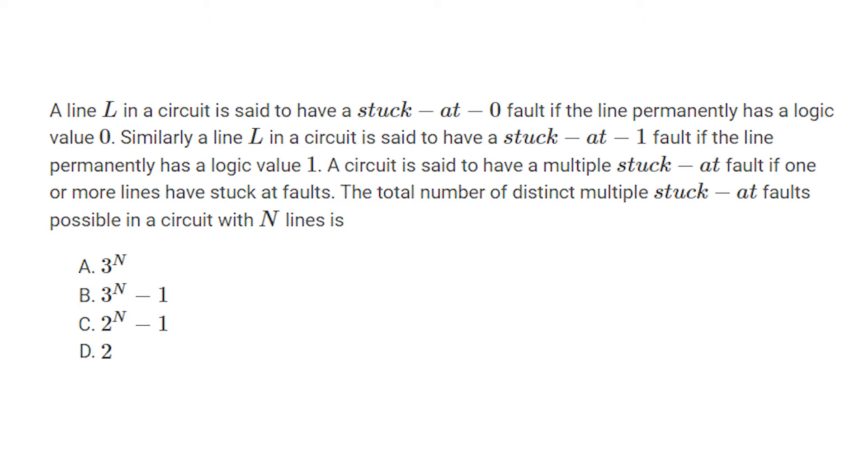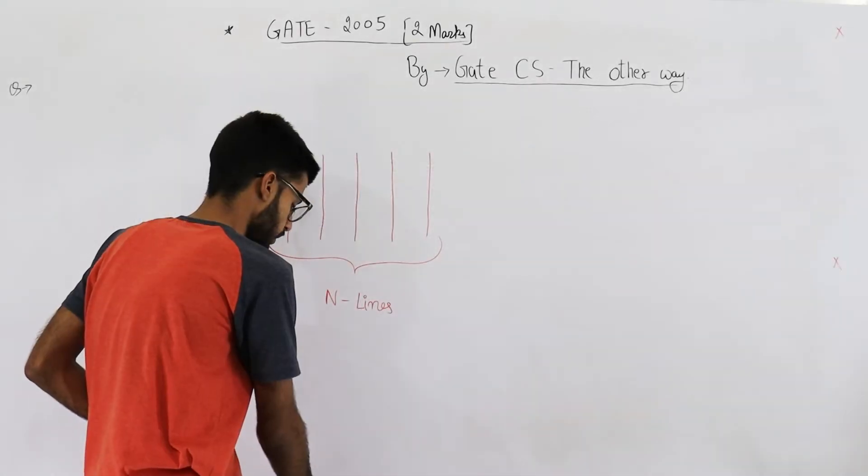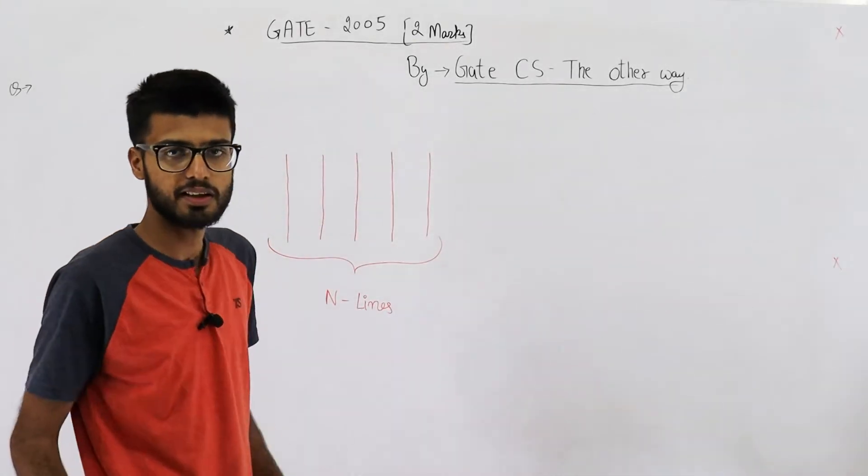if the line permanently has a logic value one. A circuit is said to have multiple stuck-at fault if one or more lines have stuck-at faults. The total number of distinct multiple stuck-at faults possible in a circuit with N lines is... So first they have defined what stuck-at-zero and stuck-at-one means.